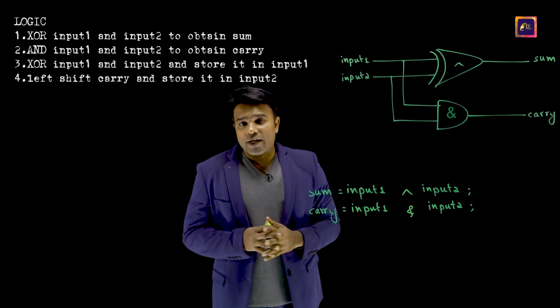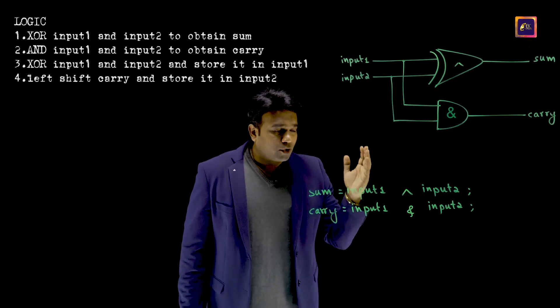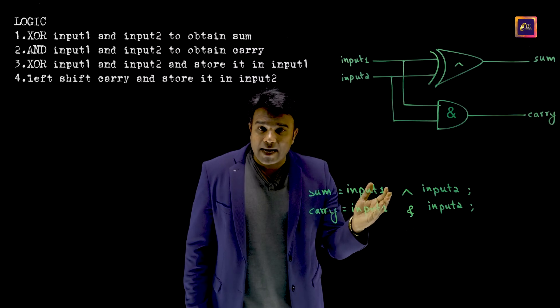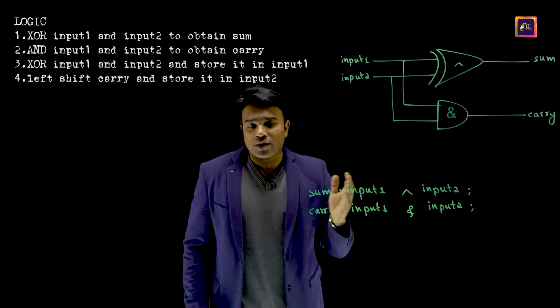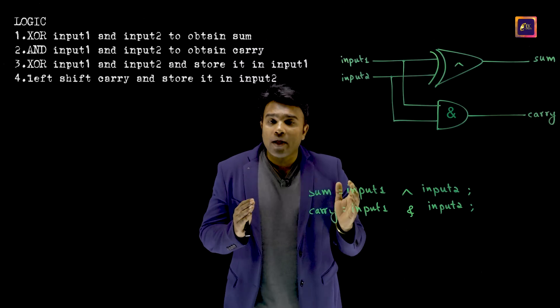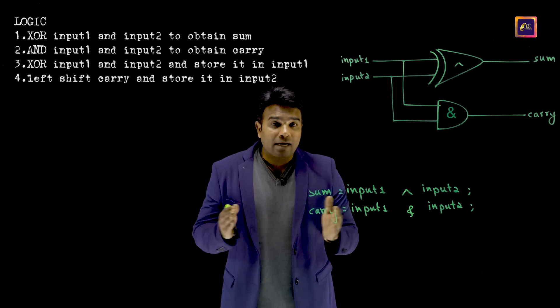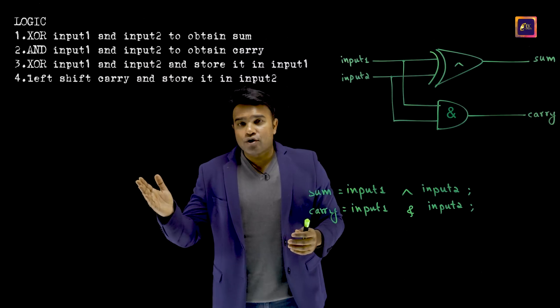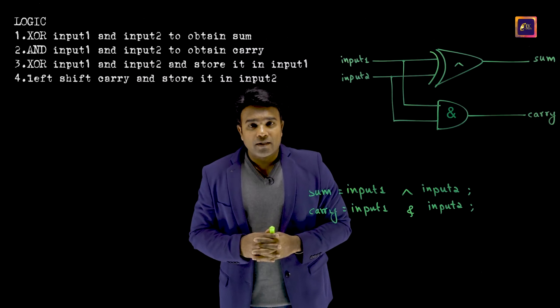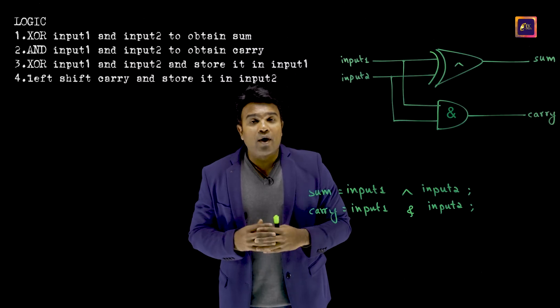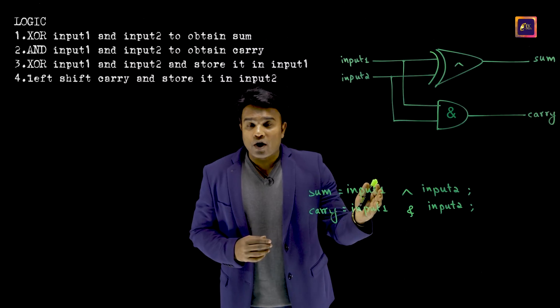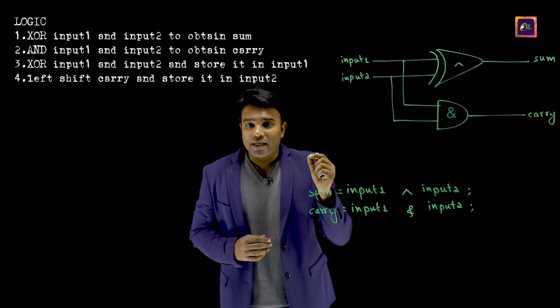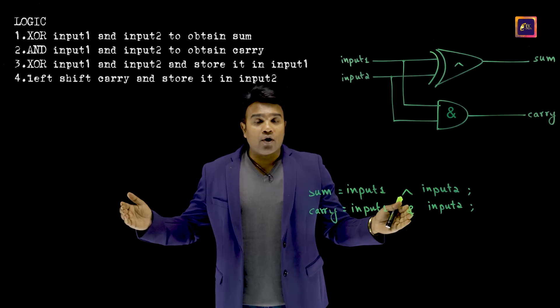But through the previous video, you have understood that though this simulates an adder, there is a limitation to this, that it can add only one bit numbers. It cannot add lengthy numbers. And that is the reason that we have the next two steps of the logic. The third and fourth steps would enable this to not just add one bit numbers, but to add even longer numbers.